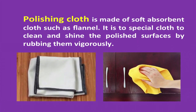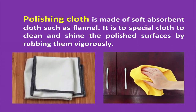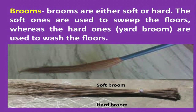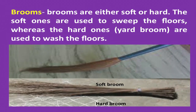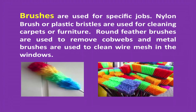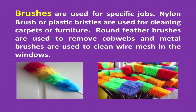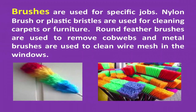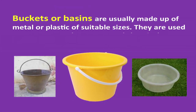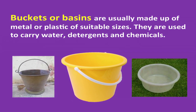Polishing cloths are made of soft absorbent cloth such as flannel. Dry polishing cloth helps to clean and shine polished surfaces by rubbing them vigorously. Brooms are either soft or hard — the soft ones are used to sweep the floors, whereas the hard ones, yard brooms, are used to wash the floors. Brushes are used for specific jobs: brushes with nylon or plastic bristles are used for cleaning carpets or furniture, round feather brushes are used to remove cobwebs, and metal brushes are used to clean wire mesh in windows. Buckets or basins of suitable sizes are used to carry water, detergents, and chemicals so that there are no spills.